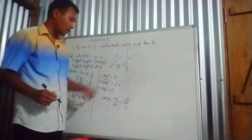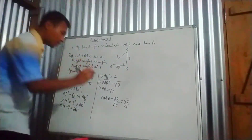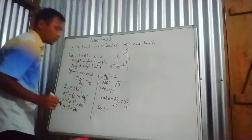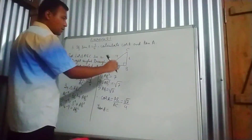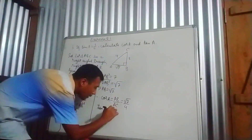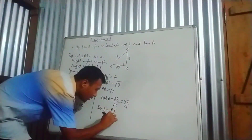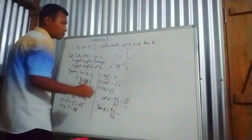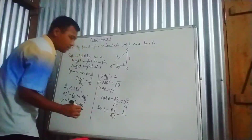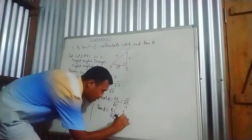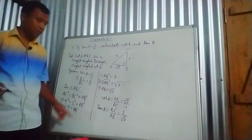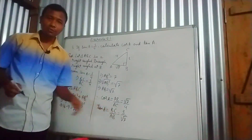Now the next one is tan A. I have to find tan A. Tan A is perpendicular by base, which is BC by AB. BC is 3 and AB is root 7. So tan A equals 3 by root 7.